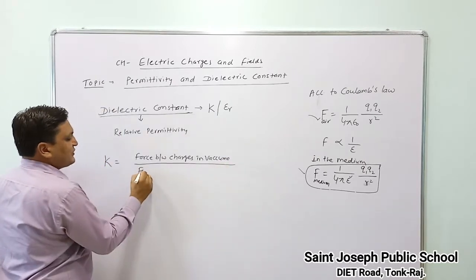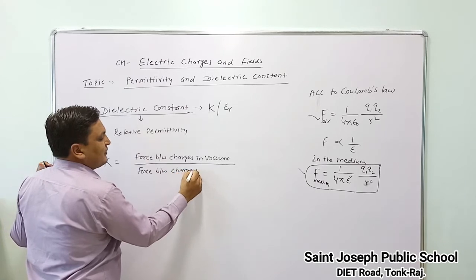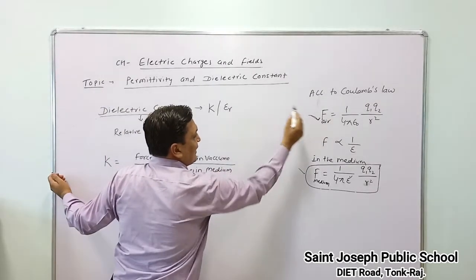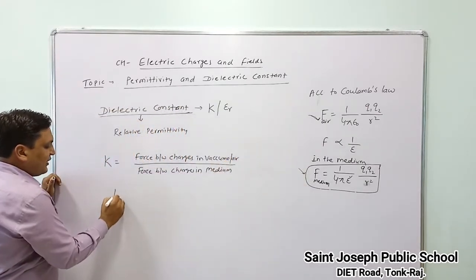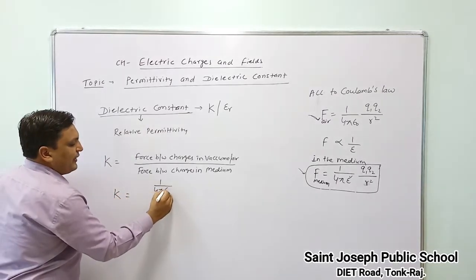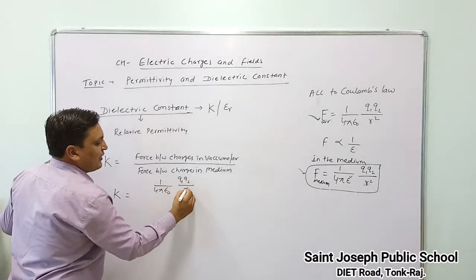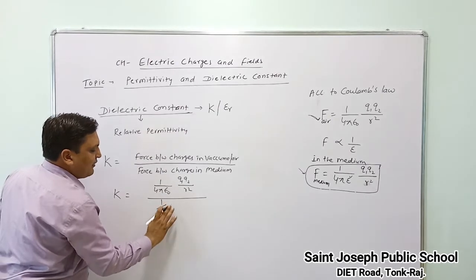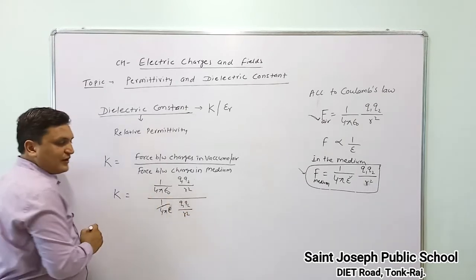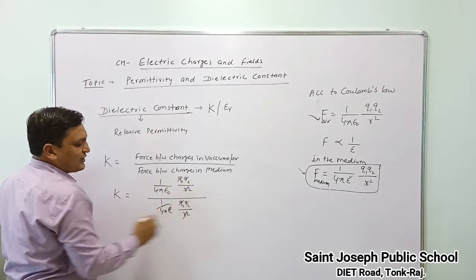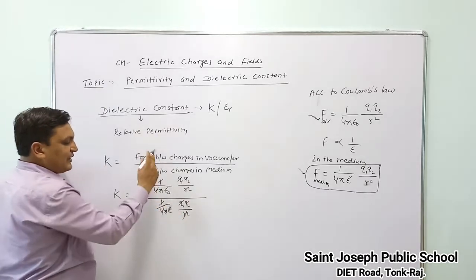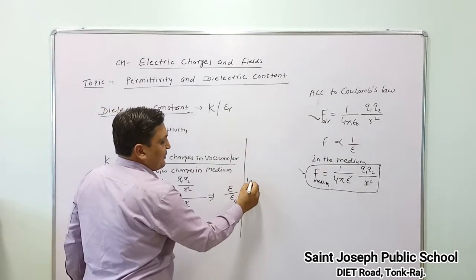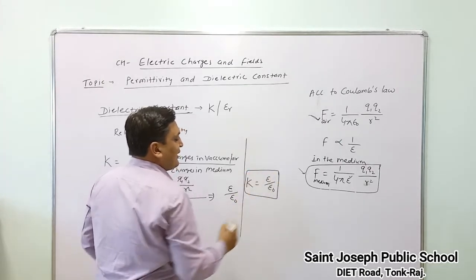Placing the values of the two forces — force in vacuum and force in medium — K equals (1 upon 4 pi epsilon naught q1 q2 upon r square) divided by (1 upon 4 pi epsilon q1 q2 upon r square). Here q1 q2 cancels, r square cancels, and 1 upon 4 pi cancels, so epsilon comes to the numerator and we get K equals epsilon upon epsilon naught.